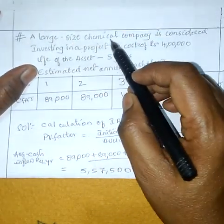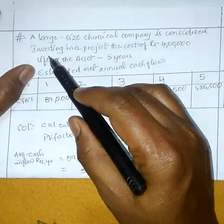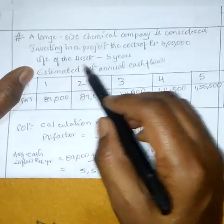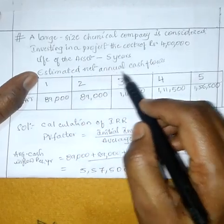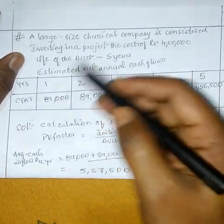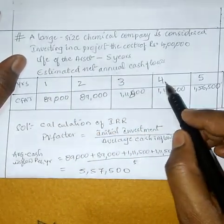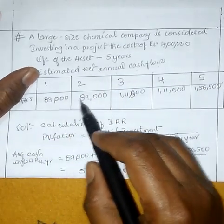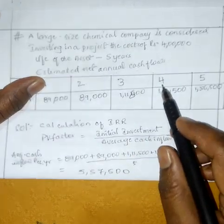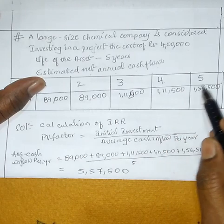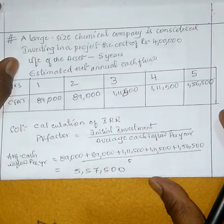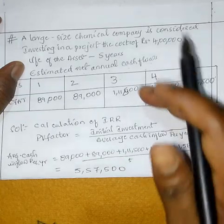A large size chemical company is considering investing in a project. The cost is Rs 4 lakhs, life of the asset is 5 years. Estimated net annual cash flows: 1st year 89,000; 2nd year 89,000; 3rd year 1,11,500; 4th year 1,11,500; 5th year 1,56,500. Ee vidanga cash inflows ravadam jarukindhi prati year ki.